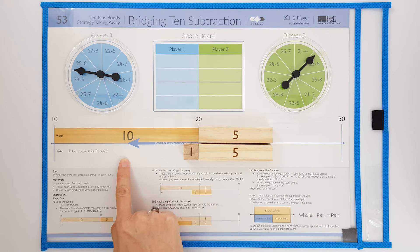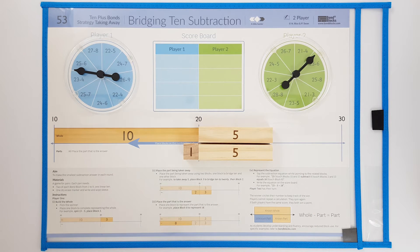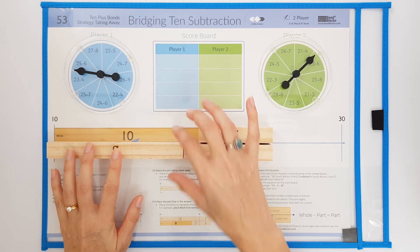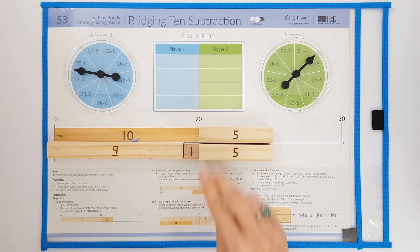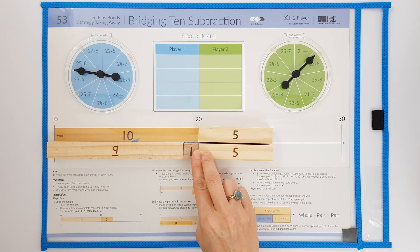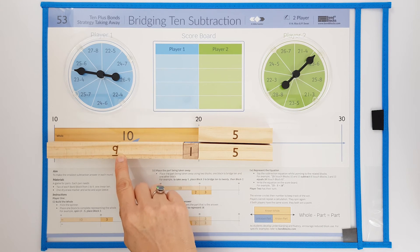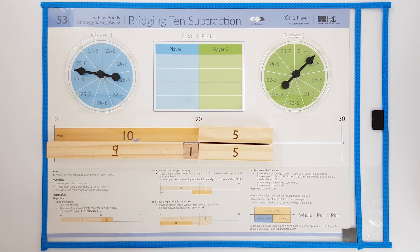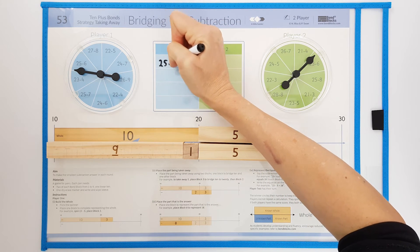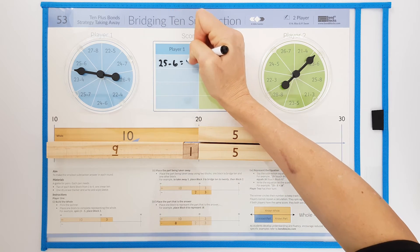I then place my part that is the answer. I say the equation 25 subtract 6 equals 19 and record this. 25 subtract 6 equals 19.